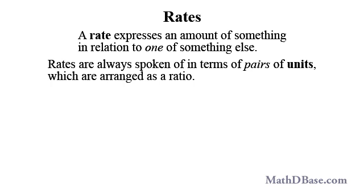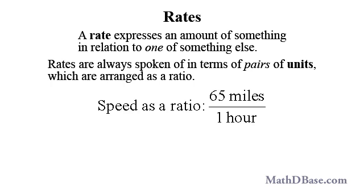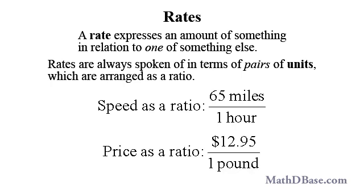Written in fraction form, a speed of 65 miles per hour would be 65 miles over one hour, and the cost of a T-bone steak in a supermarket might be $12.95 per pound, or $12.95 over one pound.